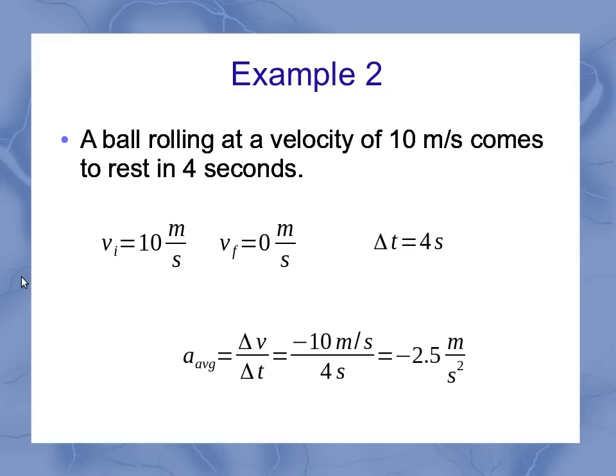Plugging those into our problem, what we see here is that since it was having a decrease in the velocity, I've got minus 10 meters per second divided by 4 seconds. So that gives me minus 2.5 meters per second squared.